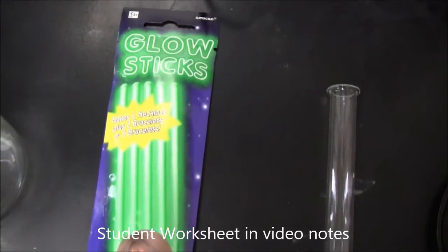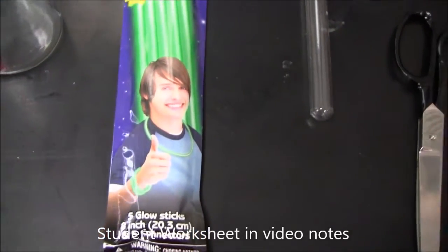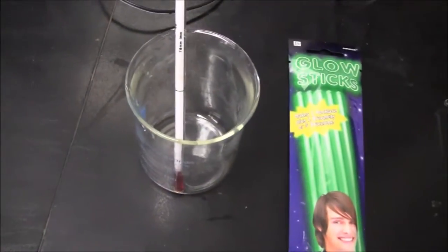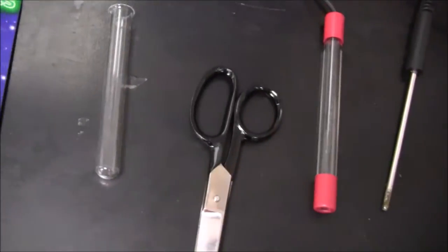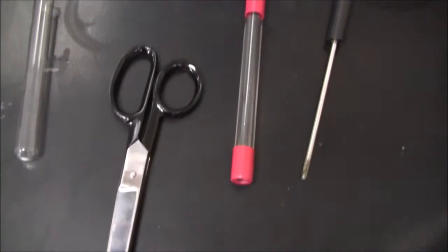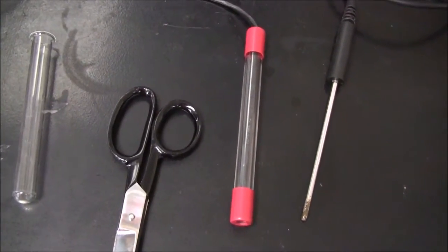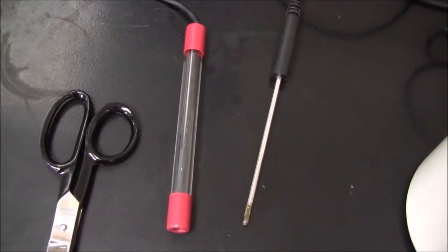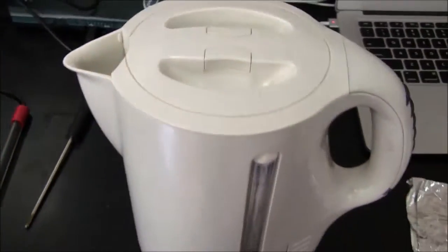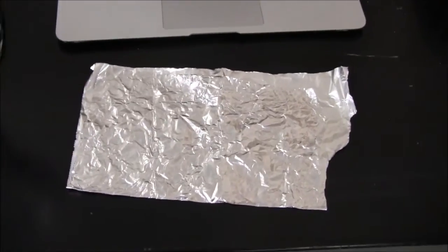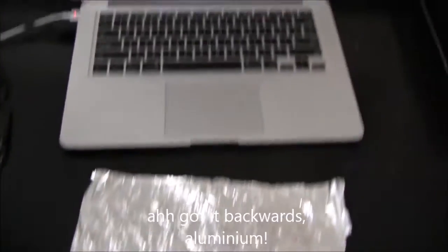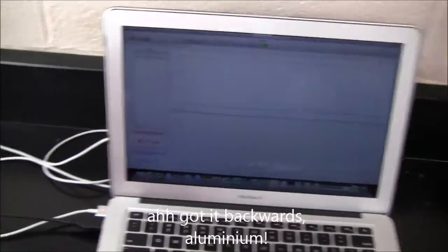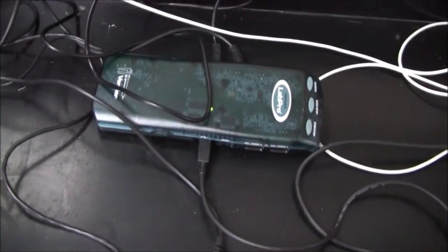So you'll need some glow sticks, green ones preferably because I know the activation energy for that one. Thermometer, beaker, test tube, scissors, light sensor, thermal probe, kettle, some aluminum foil, and a computer with the Logger Pro all set up.